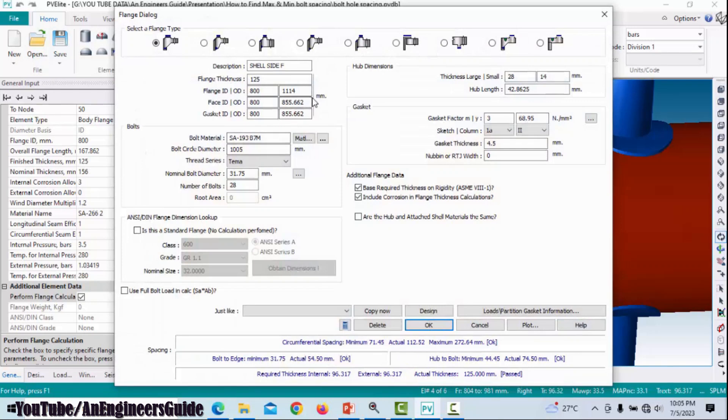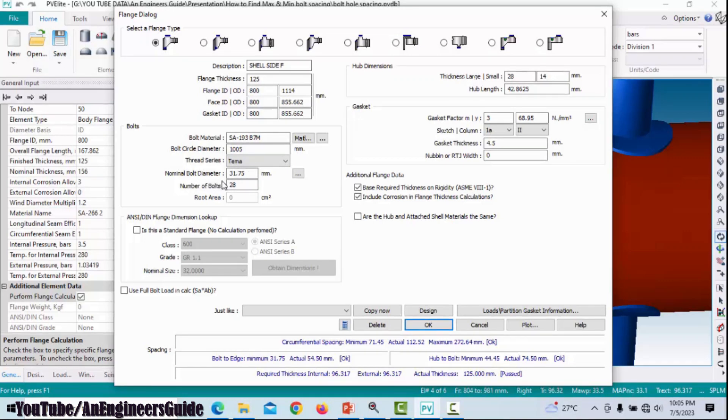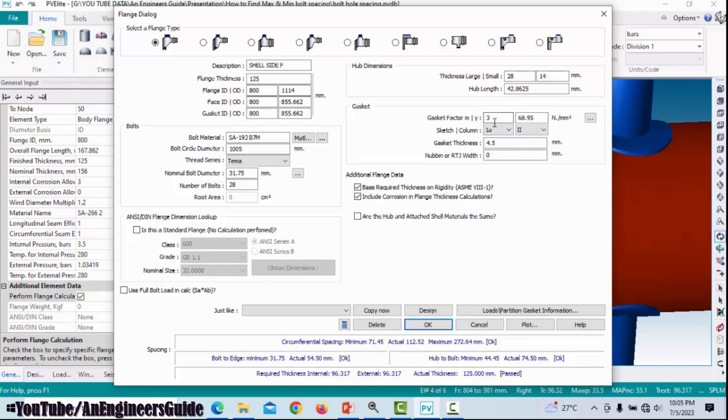Here you have to remember some things: the nominal flange thickness which is 125 mm, the nominal bolt diameter we have used which is 31.75 mm, which is nothing but 1 and 1/4 inches, and the gasket factor M which is 3.